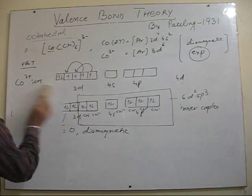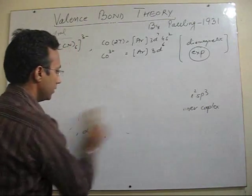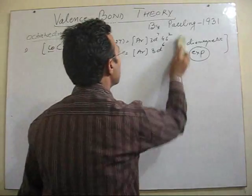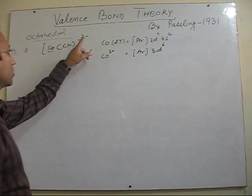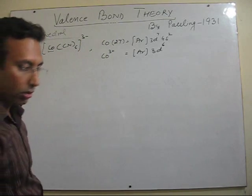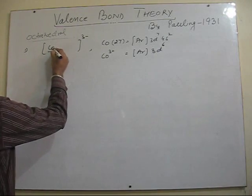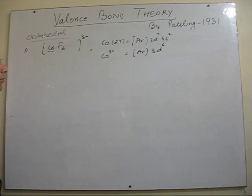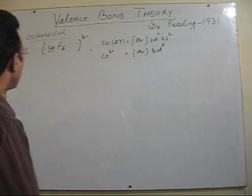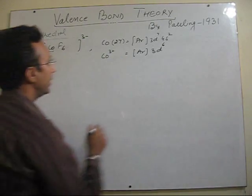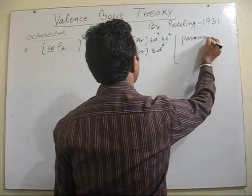Now let me take another example of the cobalt complex. In this case I am keeping certain things same. That is central metal cobalt, its oxidation state, coordination number all are same. But I am just changing the ligand. Here I take fluorine, fluoride ion as the ligand. All these things will remain same. The ligand is changed. And this complex, this is surprising, this complex is found to be paramagnetic now.